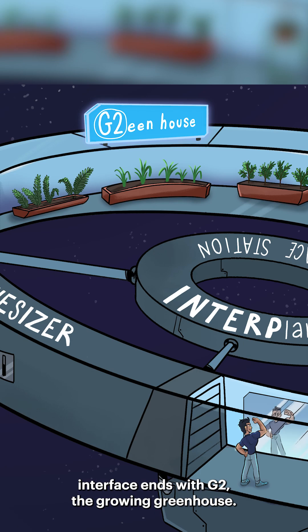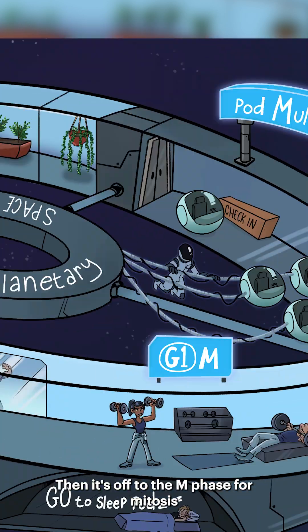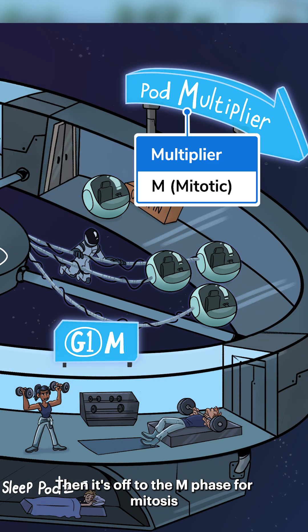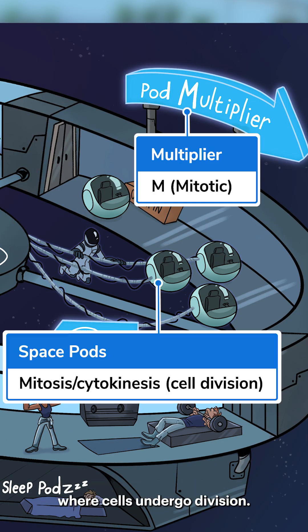Interphase ends with G2, the second growth phase. Then it's off to the M phase for mitosis, where cells undergo division.